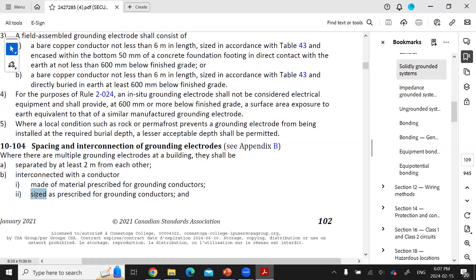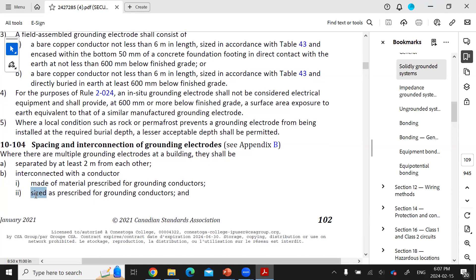Sized according to grounding conductors means they must not be smaller than number six if they're copper or number four if they're aluminum.